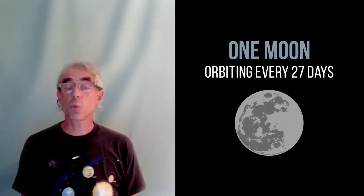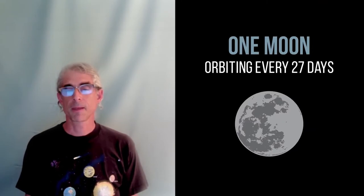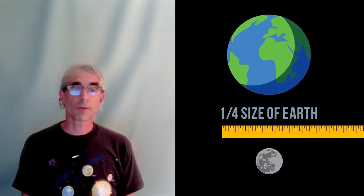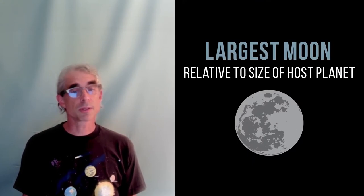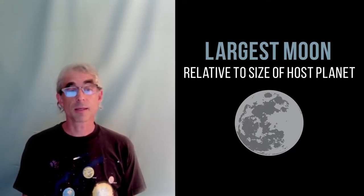Earth has just one moon orbiting it every 27 days. The moon is about a quarter of the size of the Earth itself, which makes it the largest moon relative to the size of its host planet of any in the solar system.